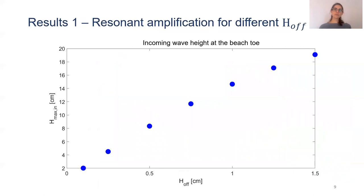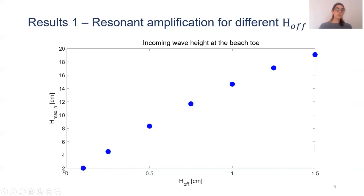After finding the most resonant period, we wanted to understand how the amplification varies according to the offshore wave height. For this, we studied the maximum incoming wave height at the beach toe, H_max_in, as a function of the offshore wave height. What we found is that the smallest wave, which is 0.1 centimeters, amplifies 20 times when reaching the beach toe, leading to a 2 centimeter wave height. Also, for our largest wave of 1.5 centimeters, you can reach close to 20 centimeters of wave height at the beach toe.